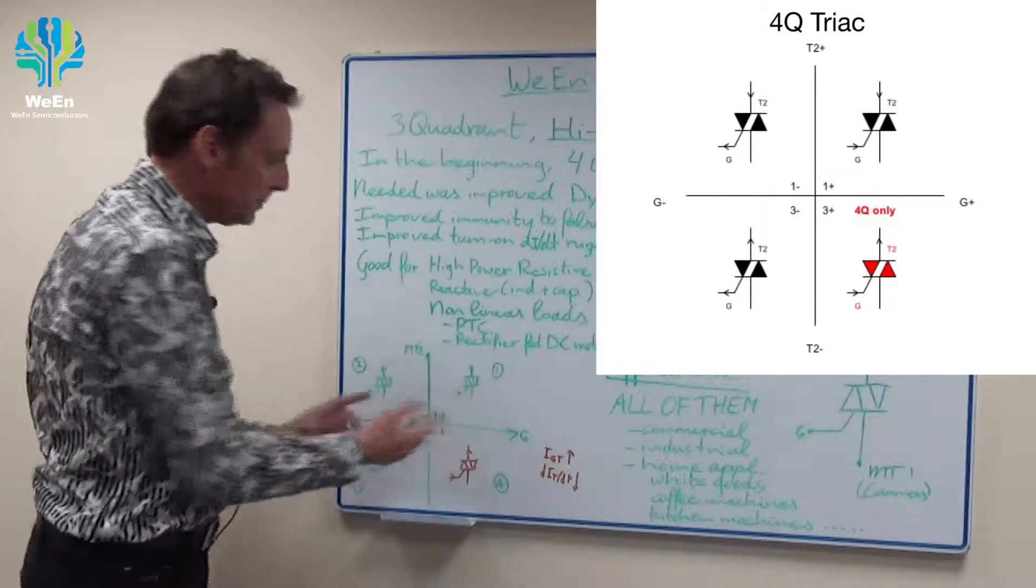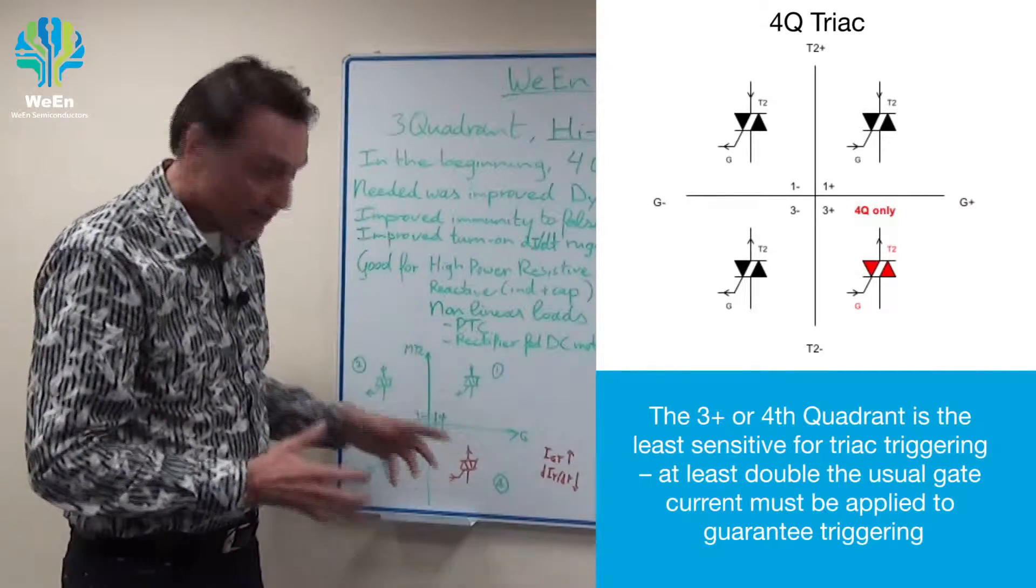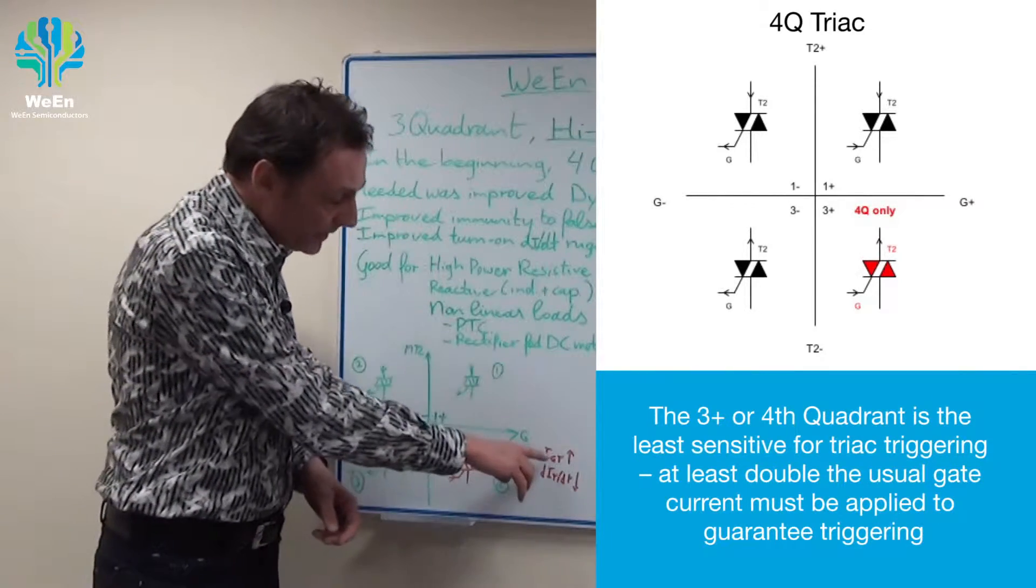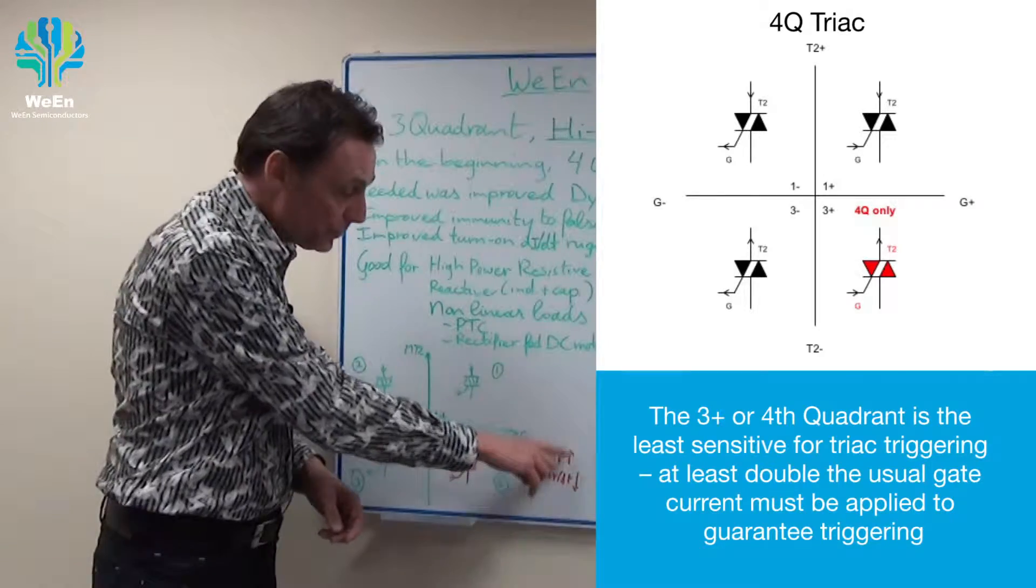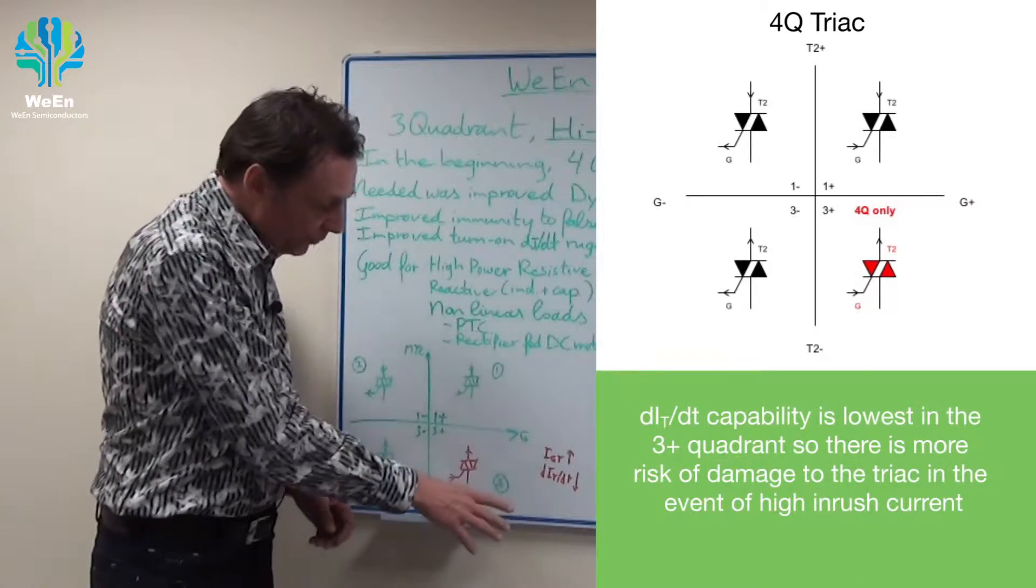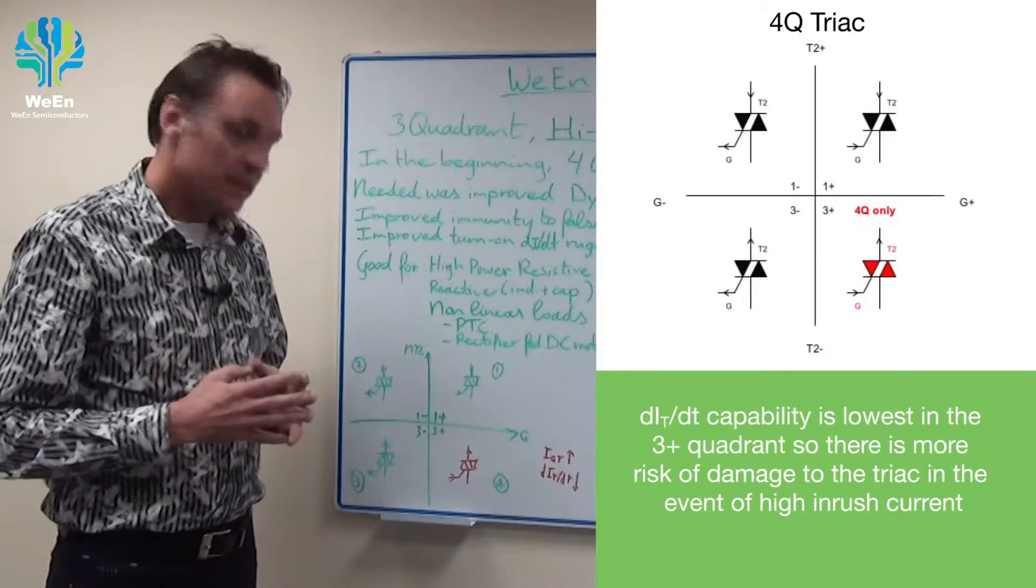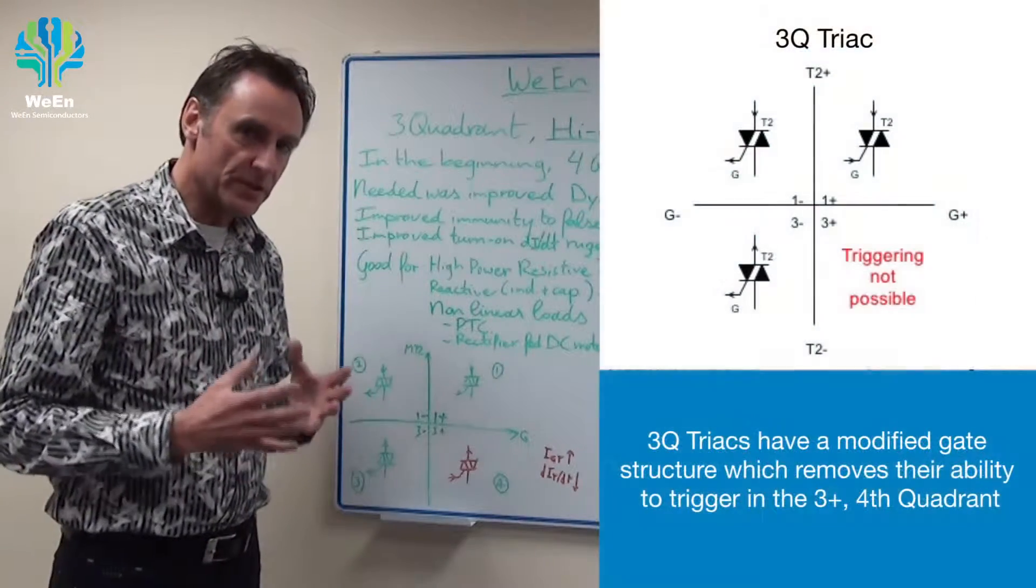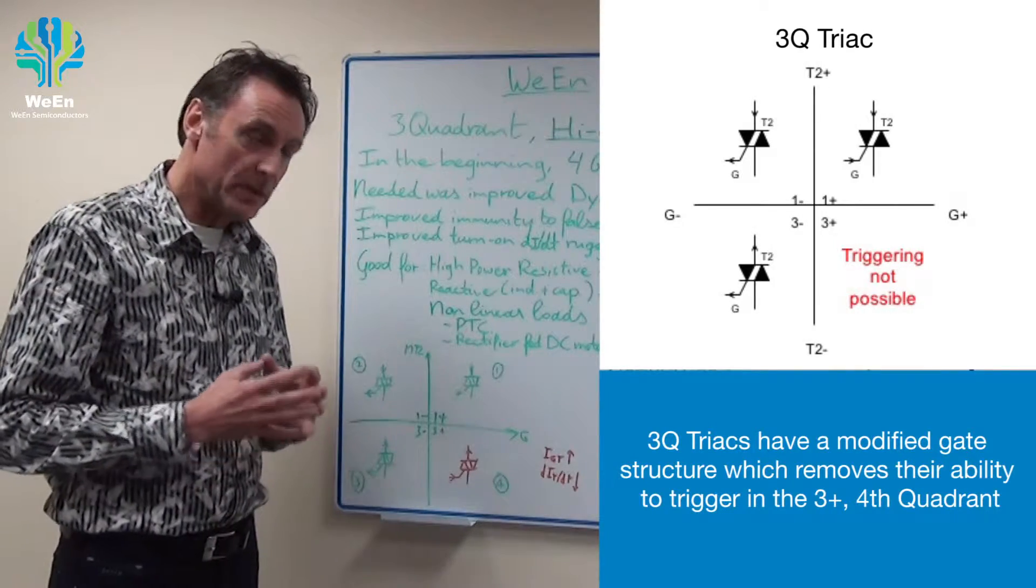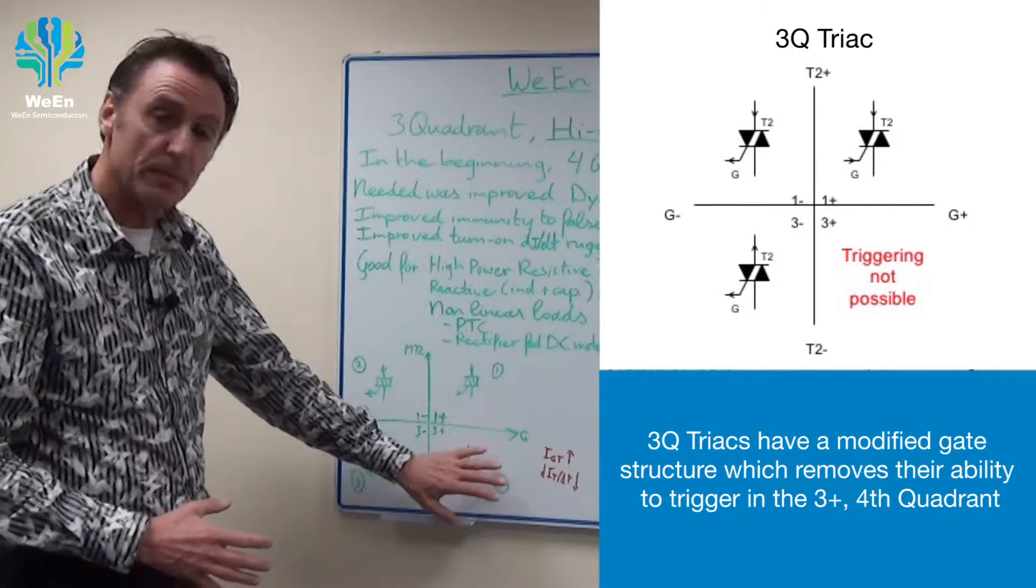The fourth quadrant in a four quadrant triac can have problems. It is less sensitive in this quadrant so IGT, the gate current, should be higher and the maximum DI/DT in the fourth quadrant is lower. So by changing the gate structure of a triac we make that the part does not trigger anymore in the fourth quadrant so you also cannot have the problem over here.